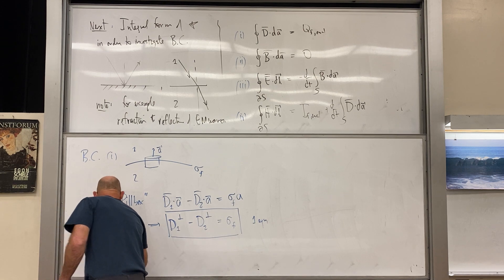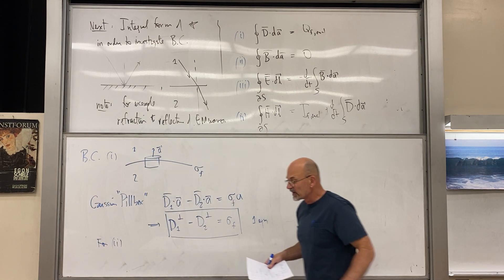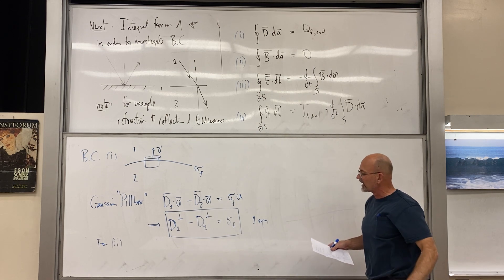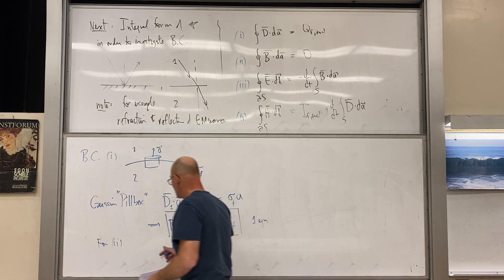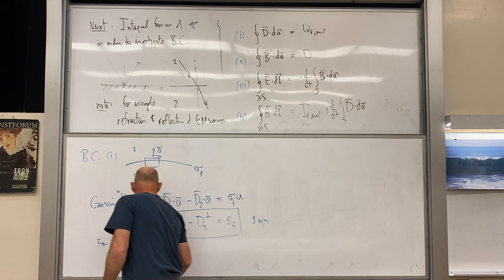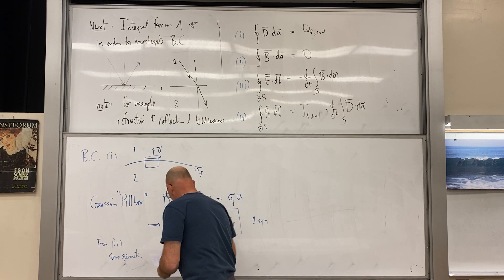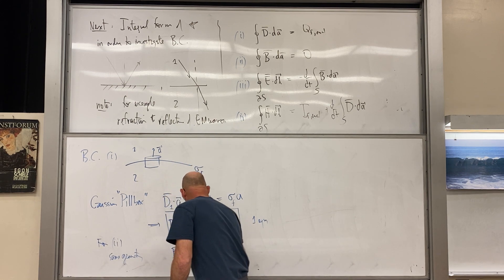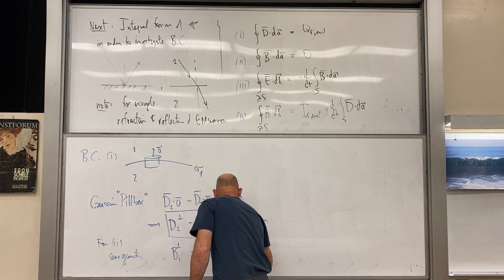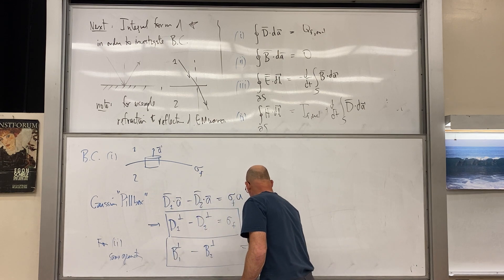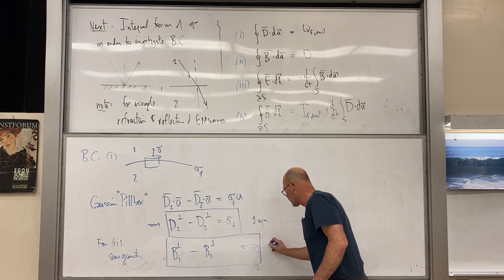For the second boundary condition from equation two — same Gaussian pillbox geometry but with zero on the right — we get B₁⊥ − B₂⊥ = 0. The normal component of B is continuous across any interface.